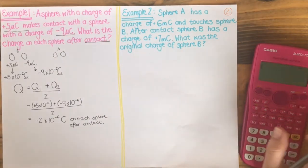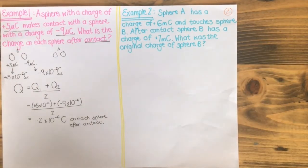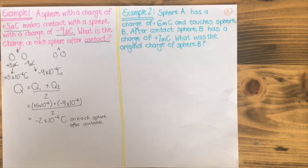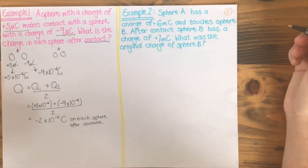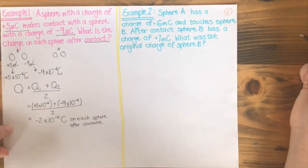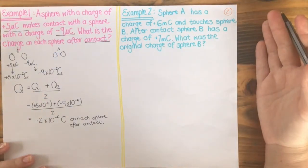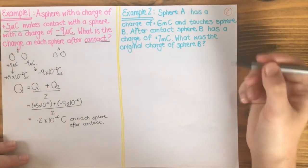If we start looking at example 2, we will see that by reading it: sphere A has a charge of positive 6 microcoulombs and touches sphere B. After contact, sphere B has a charge of plus 7 microcoulombs. What was the original charge of sphere B? Let's do our before and after — fill in what information we have and then take it from there.